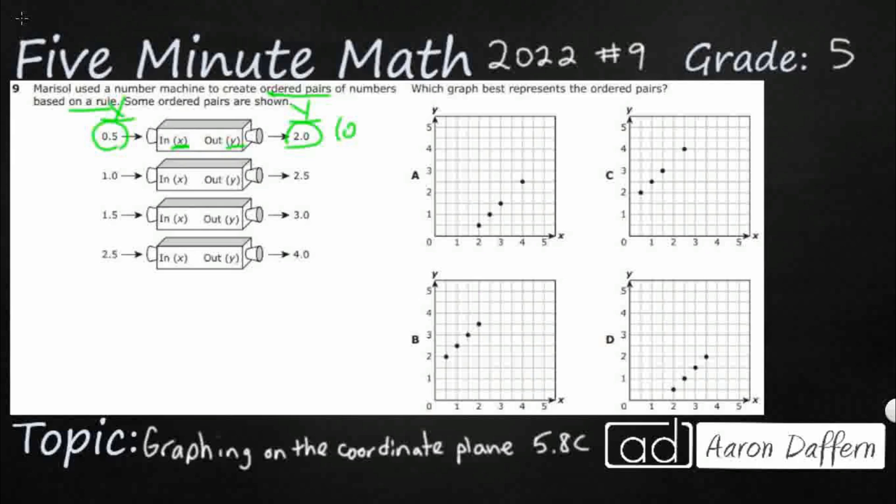This first one here is going to be, my x is going to be 0.5, my y is going to be 2.0, but I'm just going to drop that decimal since I don't really need the 0.0 unless there's something other than a 0 in the tenths place. So I've got my x as 1, my y is 2.5. Then I've got my x of 1.5, y of 3. And then I've got a 2.5 as my x and a 4 as my y.